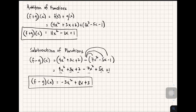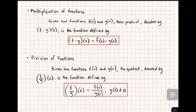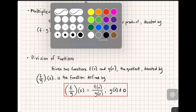Now let's move on to multiplication and division of functions. Given two functions f of x and g of x, their product denoted by f times g of x is defined by f times g of x equals f of x times g of x. For division, the quotient denoted by f over g of x equals f of x over g of x, where g of x is not equal to zero.